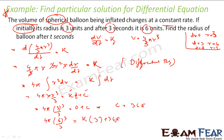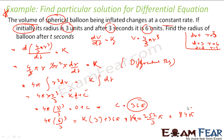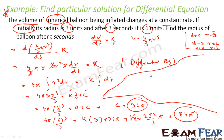Solving for k: 288π − 36π = 252π, and 252π/3 = 84π. So k = 84π. Now substituting back into the general equation: 4π/3 · r³ = 84π · t + 36π. Cancelling π throughout: 4/3 · r³ = 84t + 36, so r³ = (3/4)(84t + 36).